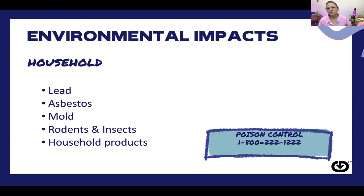The second area is household hazards. There are a number of toxins, pollutants, and poisons that can be located in housing — from cleaning solutions to lead in the water or from lead paint, asbestos, mold, rodents, insects, and household products that can be toxic, especially if they get into your eyes or are ingested. Remember, the poison control number 1-800-222-1222 is always available to guide families, individuals, and healthcare providers through an accidental or intentional overdose.